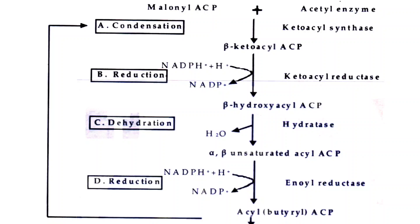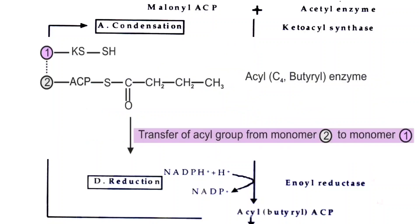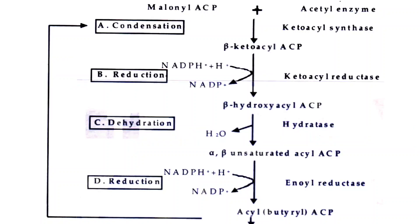At the end of the first elongation cycle, 4 carbons are added as butyrate. But palmitic acid is a 16-carbon fatty acid, so 12 more carbons must be added. The 4-carbon butyrate is therefore transferred from the ACP to the cysteine residue of beta-ketoacyl-ACP synthase of the fatty acid complex.